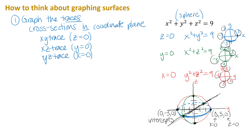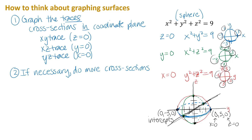Graphing the traces also finds the intercepts. Sometimes that's enough to get a decent picture — for this sphere it was sufficient. But sometimes the traces aren't quite enough to make the shape look like what it's really supposed to. If necessary, you can do more cross-sections by plugging in convenient constant values for X, Y, or Z. We'll look at examples in later videos where we need to do that.